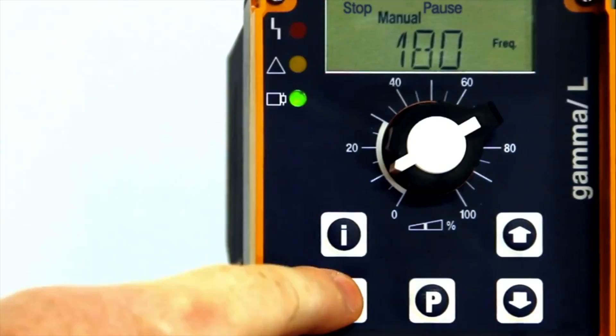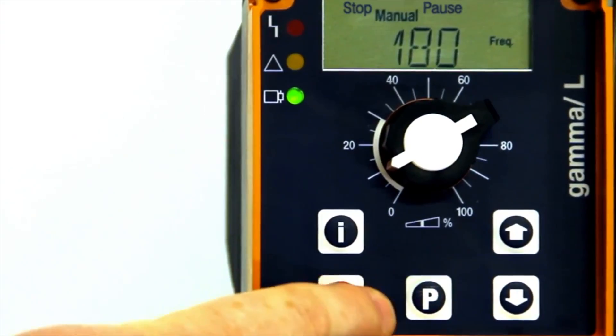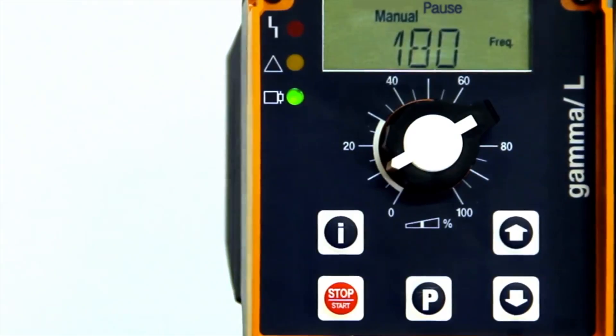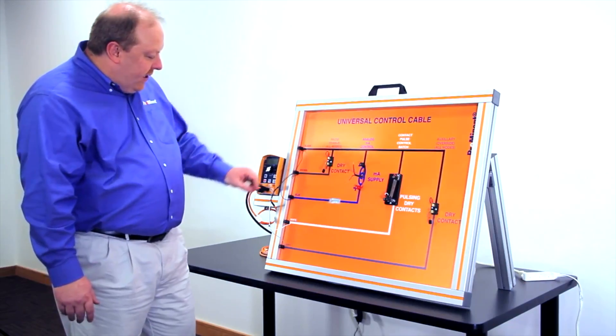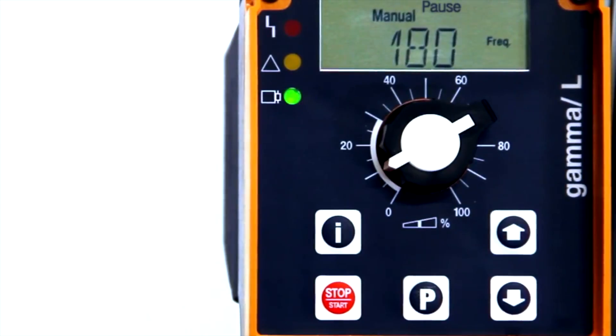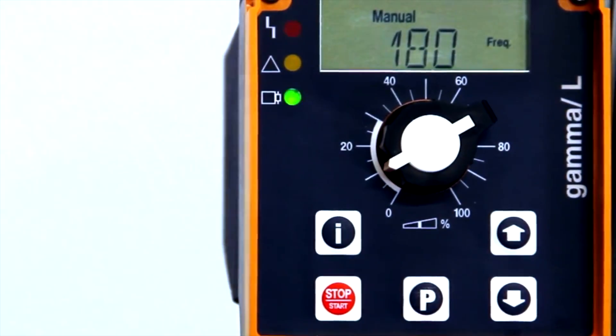The first control is the start-stop button. Once we press the start-stop button, you'll see the word stop will go away from the display. Once we close the brown wire to the black wire, the word pause goes away and the pump starts running.